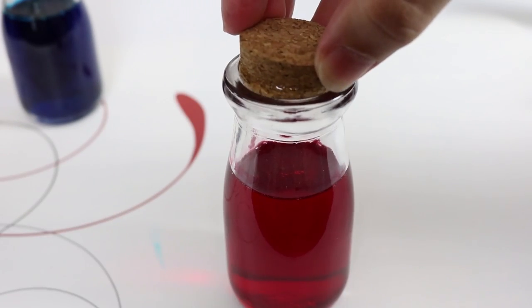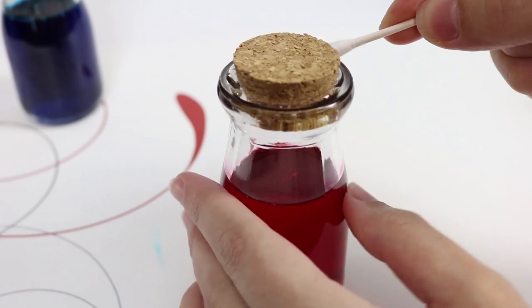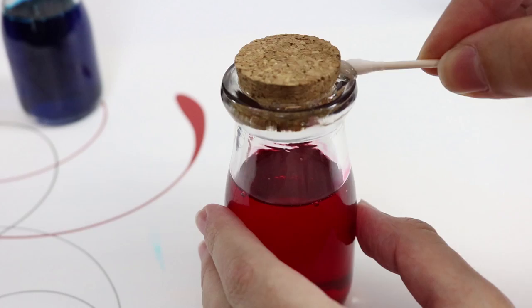Once the glue is applied, place the cork in the bottle and then clean up any overspill. This seals your potion inside and keeps it from drying up or spilling.